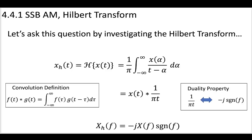We've seen that our sum signal that's undergone a Hilbert transform — our signal x(t) — is convolved with 1/πt in the time domain. Or in the frequency domain, our Hilbert transformed signal is a signal that has been multiplied in the frequency domain by -j signum f.